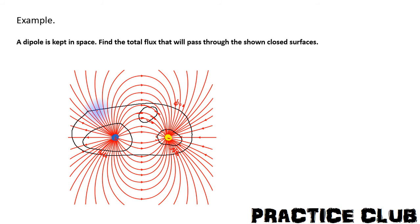For the outer surface enclosing both charges: any line that exits the surface will curve around and ultimately re-enter the surface at some other point. The lines exiting from one side will return and enter back inside the surface. Since every line that goes out eventually comes back in, the number of net lines crossing the outer surface is zero, and therefore the total flux through that outer surface is zero.